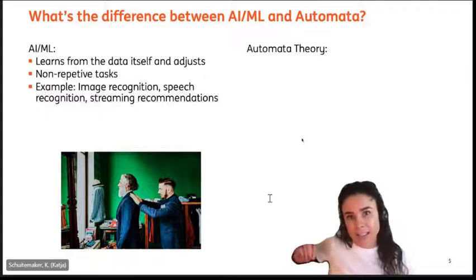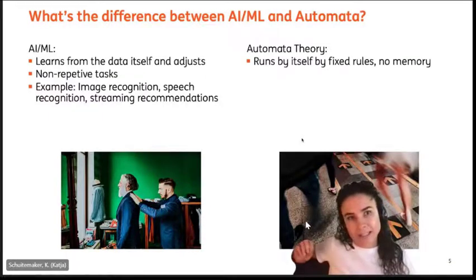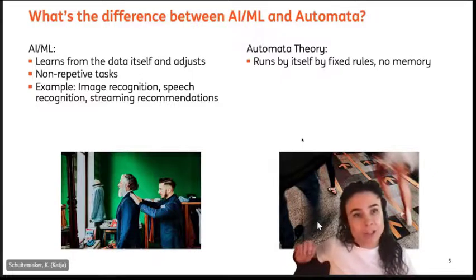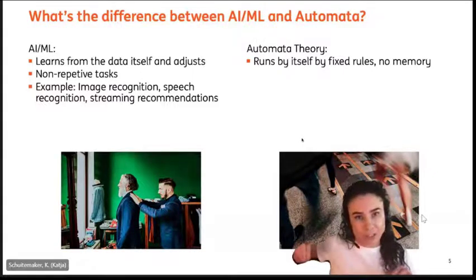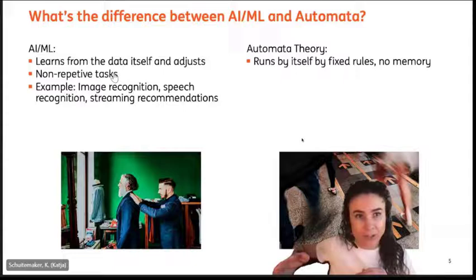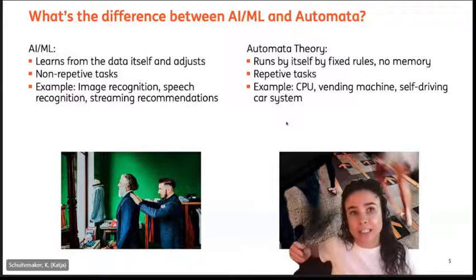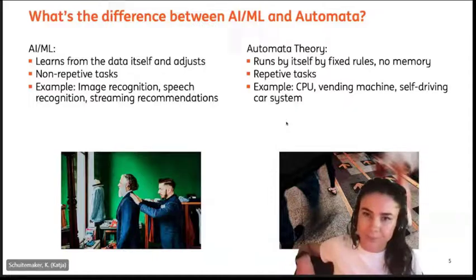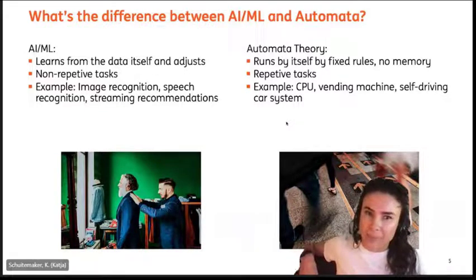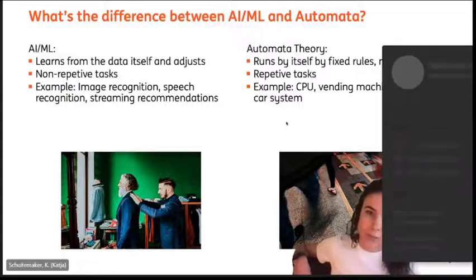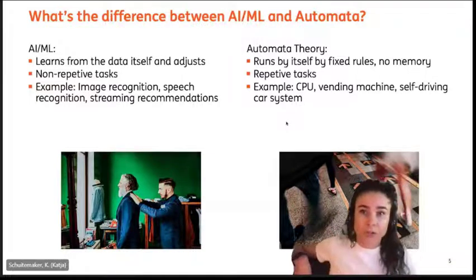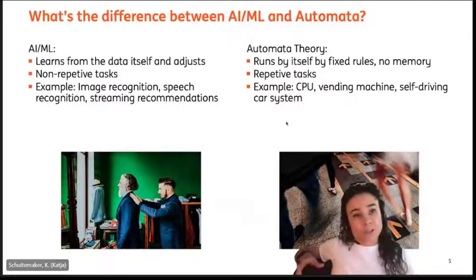Automata theory is different in the sense that it runs by itself on fixed rules, meaning there is no memory. Every transition of state is a new situation, so we do not look at the past to determine what the new state will be. There are repetitive tasks, and examples are a CPU, a vending machine, or for example a self-driving car system. Now you can imagine: if the future constantly changes, both machine learning and artificial intelligence won't be very useful, because they both by definition work off the assumption that a pattern exists.